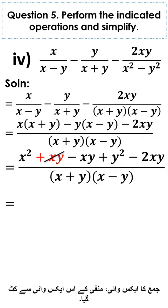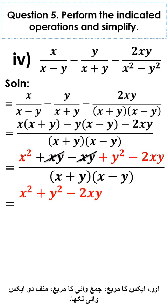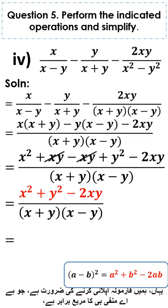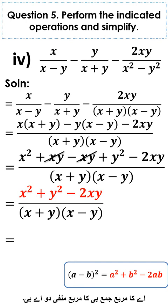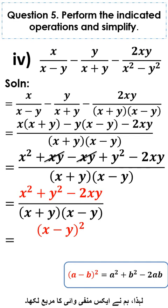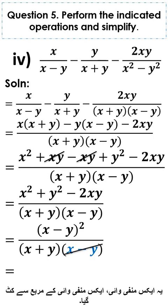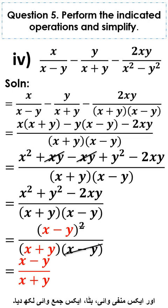Plus xy cancels with minus xy. We have x square plus y square minus 2xy, divided by x plus y into x minus y. Applying the formula a minus b whole square equals a square plus b square minus 2ab, this equals x minus y whole square divided by x plus y into x minus y. One x minus y cancels, leaving x minus y divided by x plus y. This is the answer of part 4 of question number 5.